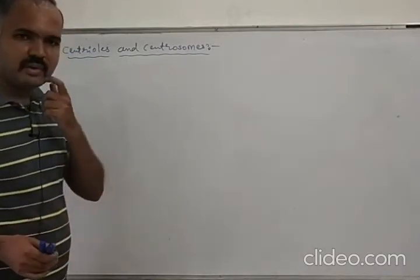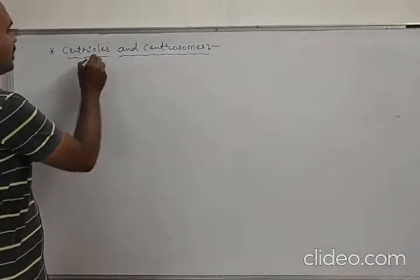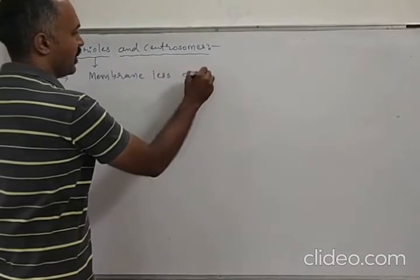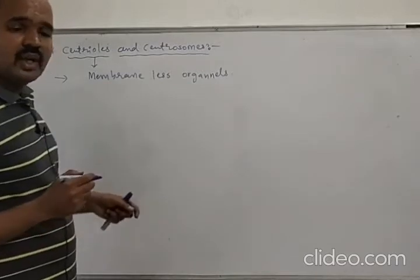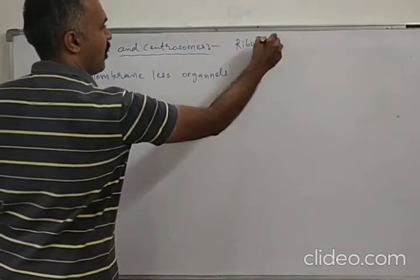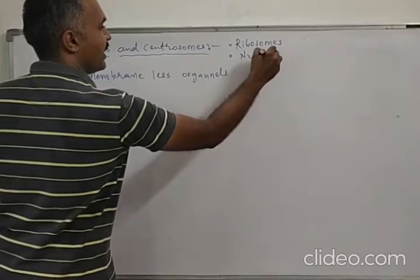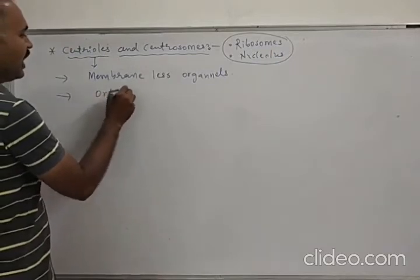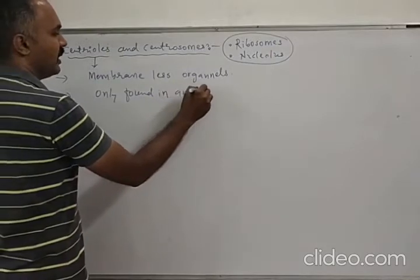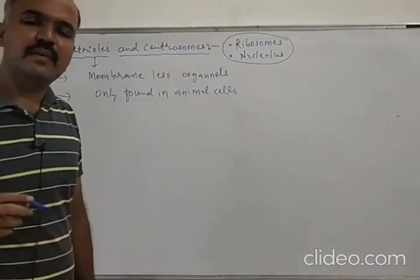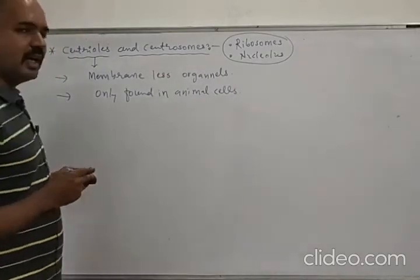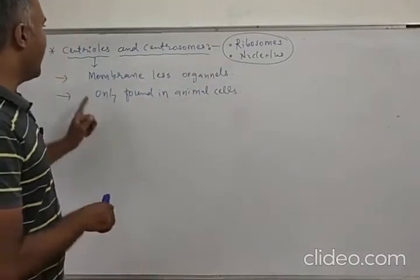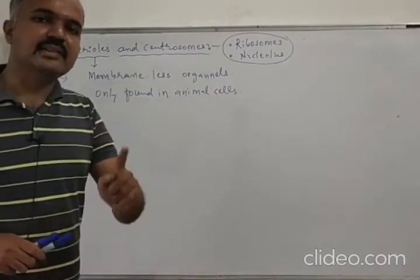We will talk about centrioles and we will also talk about centrosomes. Centrioles are membraneless organelles. Along with centrioles, ribosomes and nucleolus are also membraneless. Centrioles are only found in animal cells — they are not found in plant cells or bacterial cells.